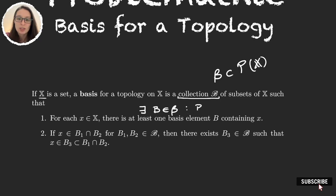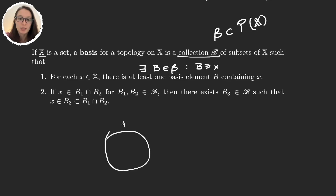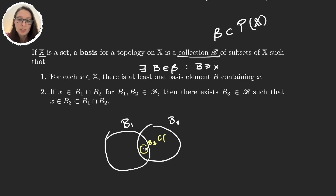The second property: when we have x in the intersection of two elements B1 and B2 that are in the basis, there exists another element B3 in the basis such that x is an element of B3 and B3 is contained in the intersection. So basically, there always exists a smaller element B3 that is also in our basis. This gives us some sort of density, because we can always go deeper.